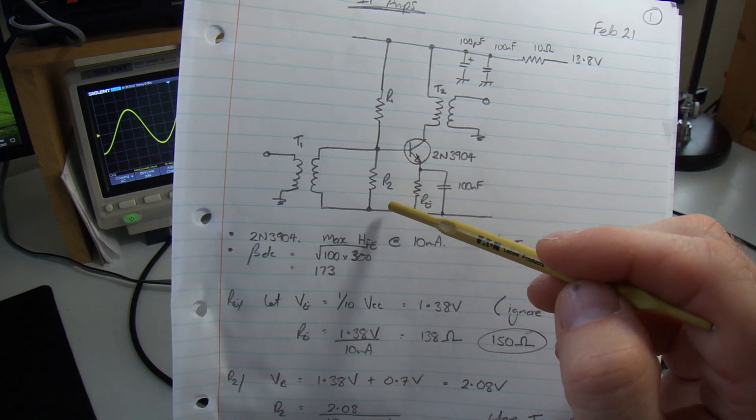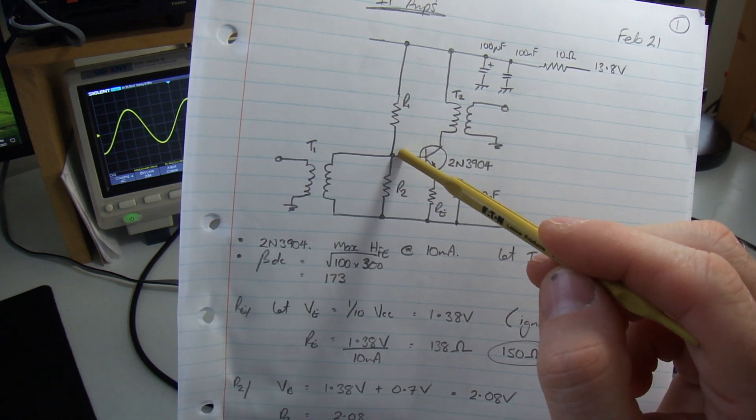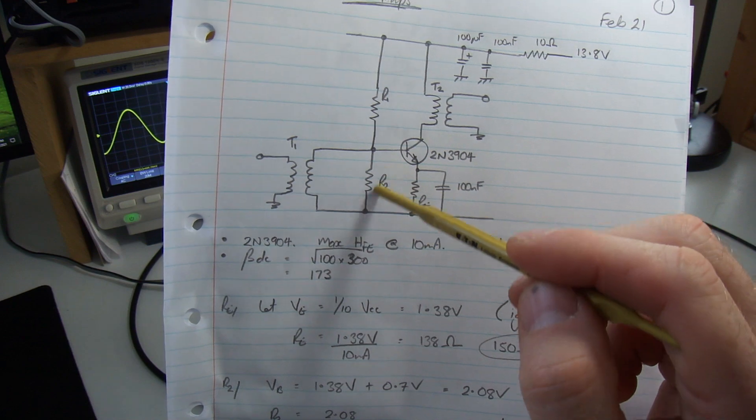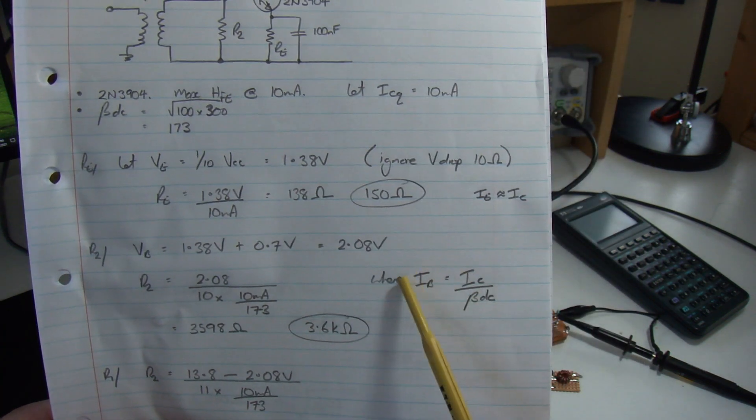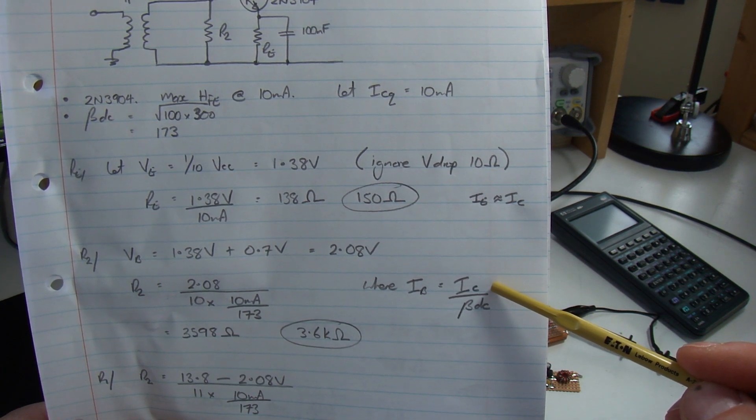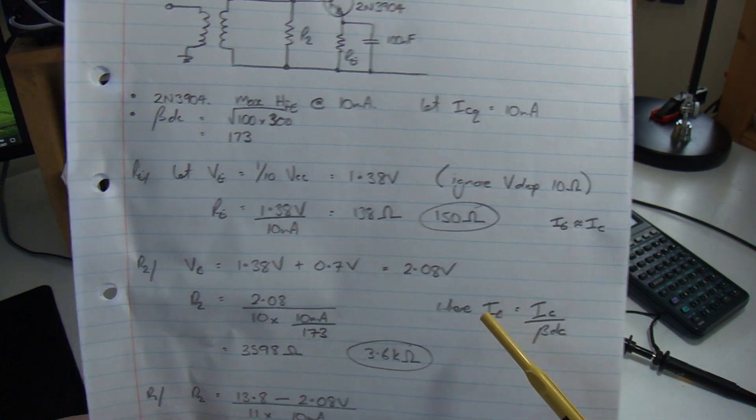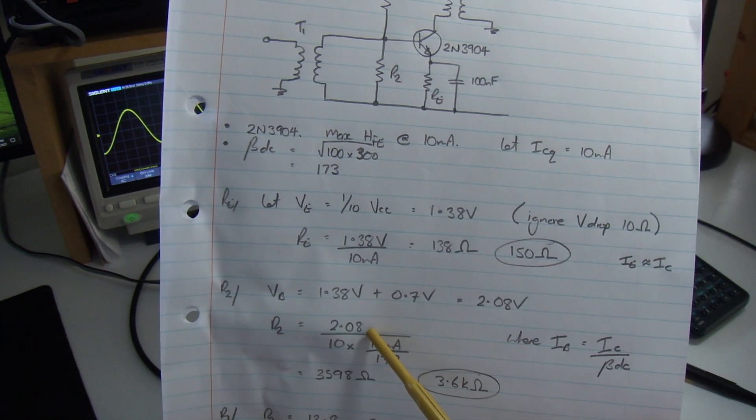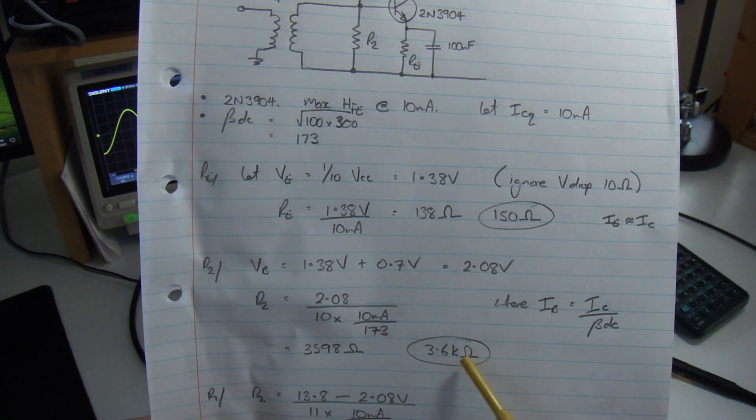The current through this I'm going to set to be 10 times the base current, so in order to make this nice and stiff at this point for voltage divider biasing, I want at least 10 times the base current passing through R1, R2. Our base current equals our collector current divided by beta DC. 10 milliamps divided by 173 gives us our base current. So 2.08 divided by 10 times the base current comes out at 3598 ohms. The nearest standard value is 3.6k ohms.